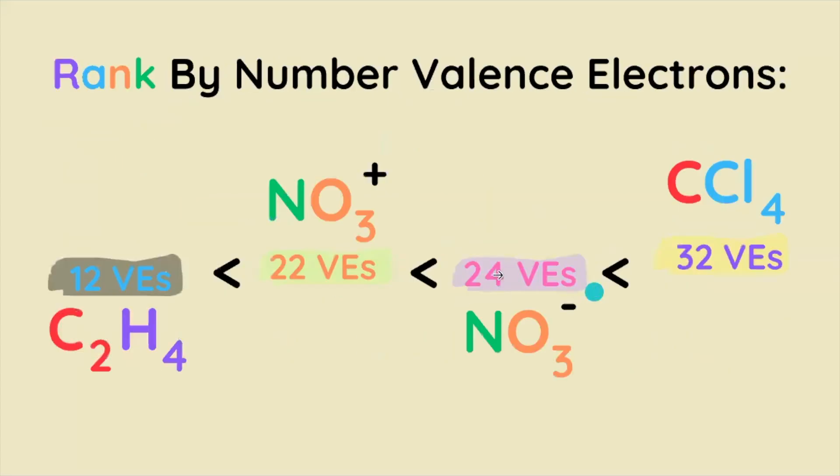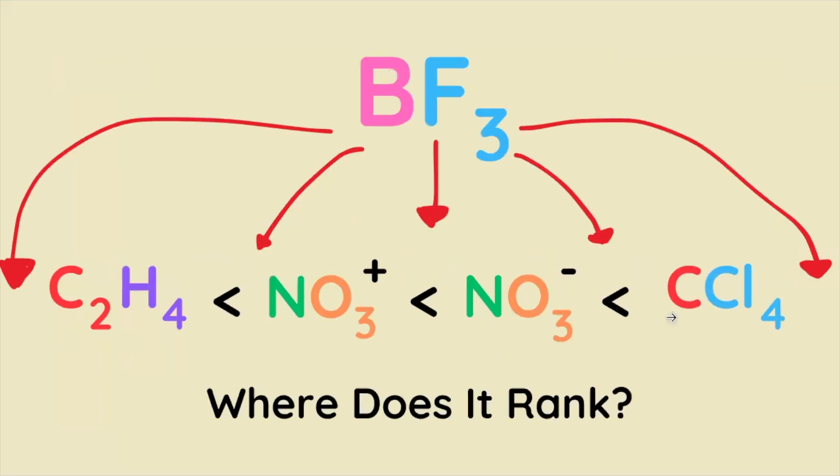Here's our final ranking of each molecule by the number of valence electrons. It's worth thinking about what elements are in each molecule and how that might correspond to where it falls within this ranking. Speaking of which, where does boron trifluoride fall within this ranking? Go ahead, try that out, and tell me what you think in the comment section.